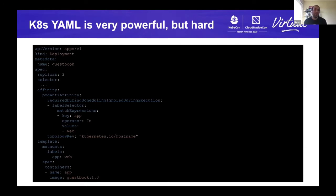This YAML isn't even complete. You might notice that we left out parts of the selector because we couldn't fit the entire YAML on this slide. While it is challenging that Kubernetes YAML is this verbose, it's almost a bit necessary for Kubernetes to solve all the different use cases it's trying to address. As a result, we as developers have a challenging problem of managing Kubernetes files — and this is just one Kubernetes file.